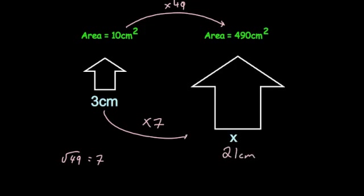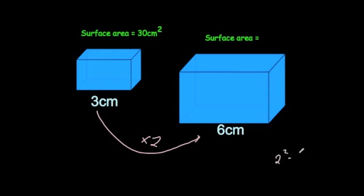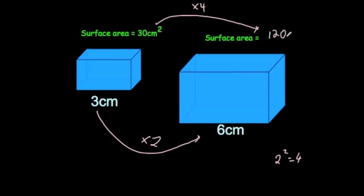This also works for surface area because it's just an area. If you enlarge the sides by a scale factor of 2, you're enlarging all the sides by a scale factor of 2. 2 squared equals 4, so the surface area gets bigger by a scale factor of 4, because all the areas of all the rectangles would be 4 times bigger, and altogether the whole lot would be 4 times bigger. So the surface area is multiplied by 4. 30 times 4 is 120 centimetres squared.